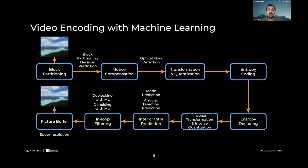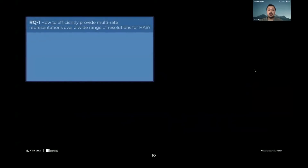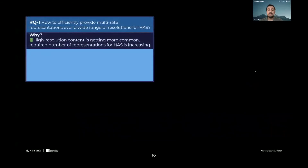When we look at the video encoding pipeline, we can see multiple places where we can apply machine learning and improve the performance. This brings us to our research questions, of which we have four. The first one: how can we efficiently provide multi-rate encoding for HAS? The content has increased and resolutions are increasing, meaning we need more representations for HAS.